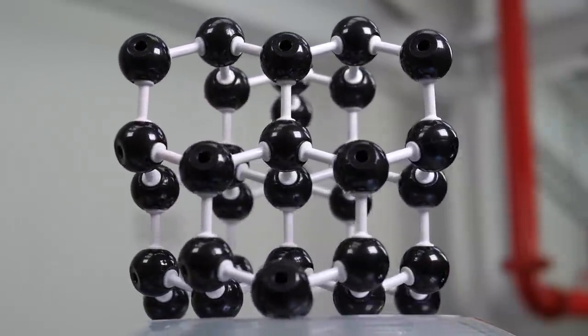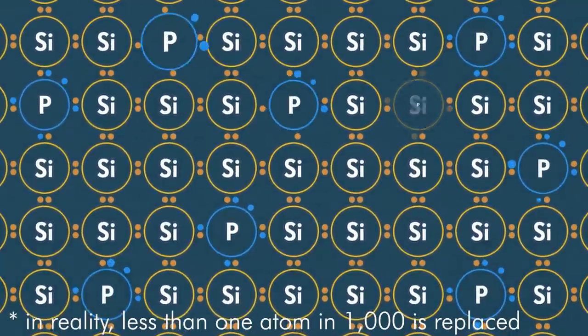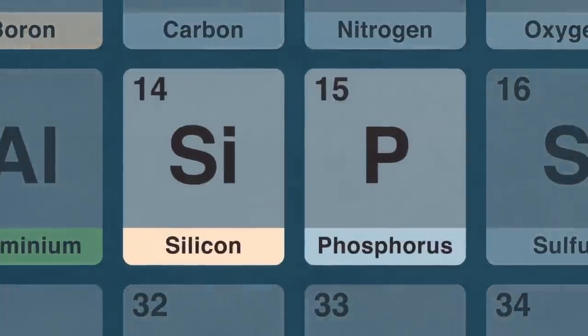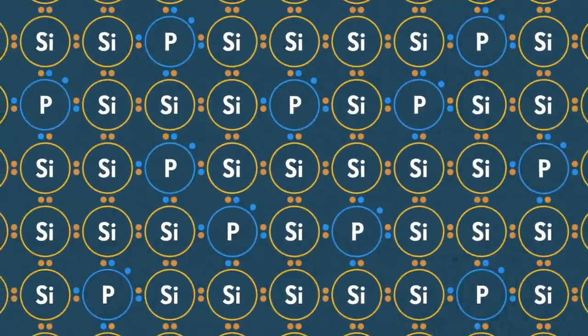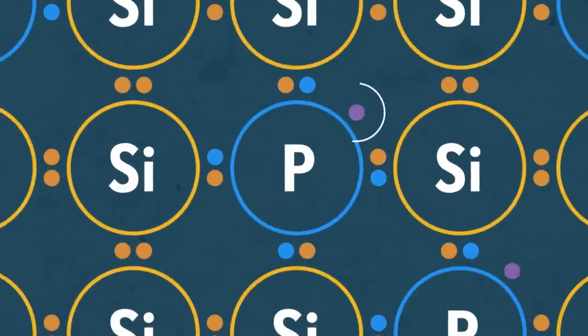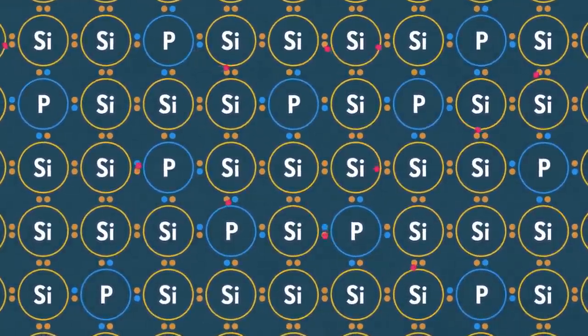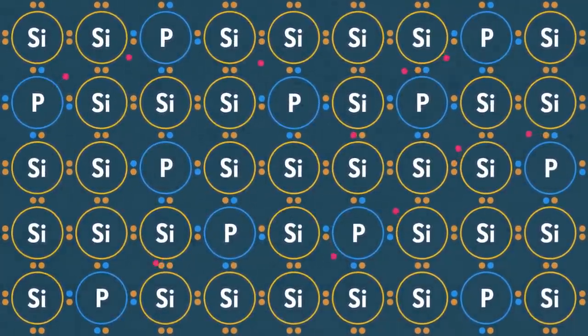All these electrons are locked away in those complete shells — they can't move. So there are no freely moving charged particles in a silicon crystal, meaning silicon isn't a great conductor of electricity. But suppose we swap out some of these silicon atoms for phosphorus. Phosphorus is the next atom in the periodic table, so it has an extra electron. But because all of these shells are already full, this extra electron has nowhere to go — it's not locked in place, it's free to move around. So when you dope silicon this way, you introduce these freely moving charged particles, and this doped substance is able to conduct electricity. This is called an N-type semiconductor — N standing for negative, because the charge carriers are negative.